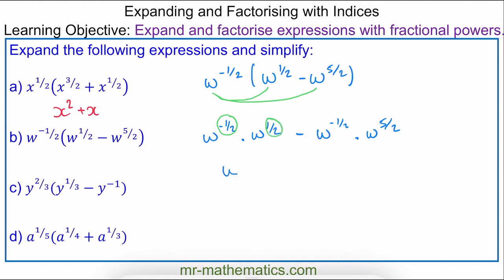So we have w to the zero, minus w to the power of four over two, since negative one half plus five over two gives four over two. Anything to the power of zero is one, so this becomes one minus w squared.